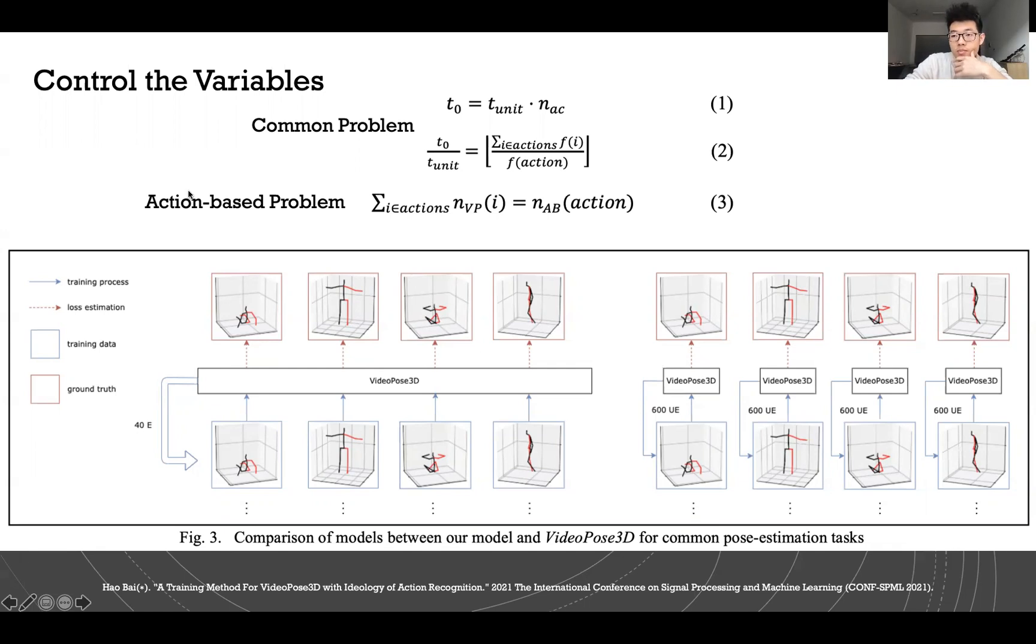Another problem is called action-based problem, which is very popular these days. You only want to give in a certain kind of training data—only about one action. For example, you only transfer sitting data, and you want this specific kind of action to be resolved, to be estimated. In this kind of problem, the control variable is a bit different. We pass all 6,000 data into the VideoPose3D operator. But in here, we can only pass 400 to control the variables, because we only have one type of data.